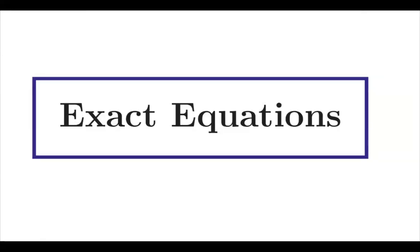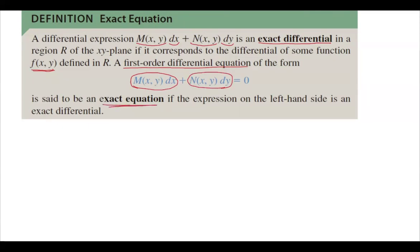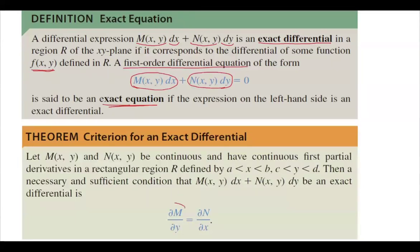A differential expression M(x,y)dx + N(x,y)dy is called an exact differential in a region R of the xy-plane if it corresponds to the differential of some function f(x,y). A first-order differential equation M(x,y)dx + N(x,y)dy = 0 is said to be an exact equation if the left-hand side is an exact differential. The criteria: if the partial derivative of M with respect to y equals the partial derivative of N with respect to x, then you have an exact differential.